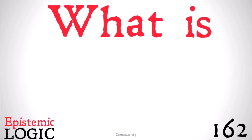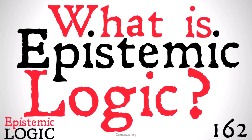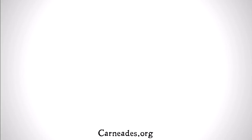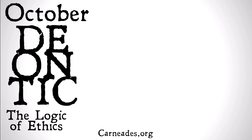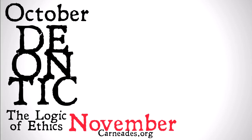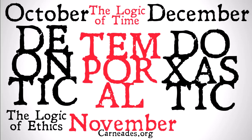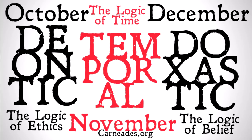In this month we're going to be looking at epistemic, doxastic, and justification logic. And in this video we'll be answering the question: what is epistemic logic? At the beginning of this series I said we were doing October on deontic logic, November on temporal logic, and December on doxastic logic, or the logic of belief. But in fact what we're going to be doing is expanding December to cover not only doxastic logic, but epistemic logic and justification logic as well.